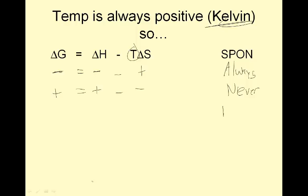What if I wanted it to be spontaneous at high temperatures? An example of this would be boiling water. Water boils spontaneously at hot temperatures like 100°C, but not at low temperatures. If you boil water, it has to absorb heat — the water absorbs heat from your stove. Minus temperature is going to be high, and disorder increases. So a positive minus a positive will be spontaneous at a high temperature — spontaneous sometimes, and that sometimes would be at a high temperature.